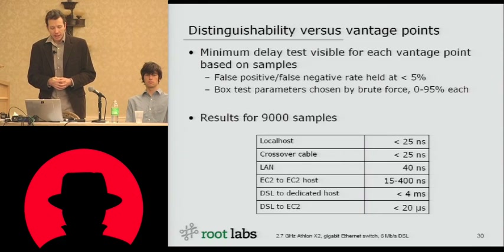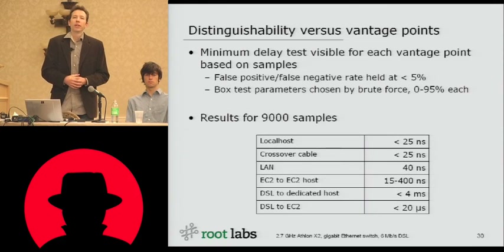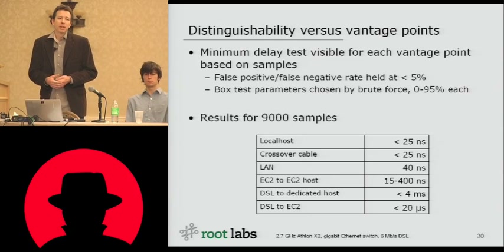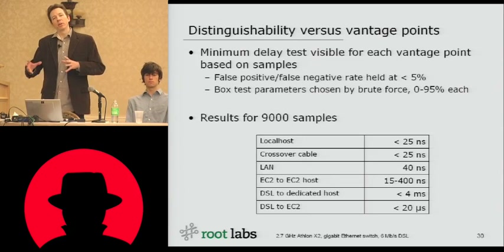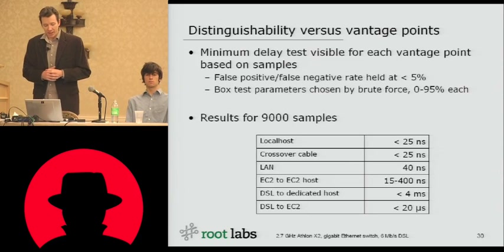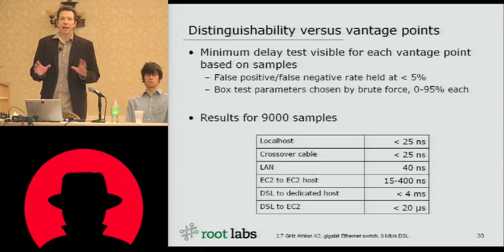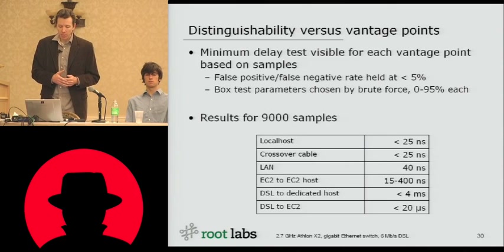For our dedicated hosts, the result was actually very poor. We thought by getting a dedicated host it would be idle and we'd get good measurements, but the provider had put it on a network that wasn't the best and had a decent amount of jitter, possibly due to firewalling. We could only resolve about four milliseconds, which is really bad compared to other WAN tests. For DSL to EC2, we could reliably distinguish 20 microsecond differences.